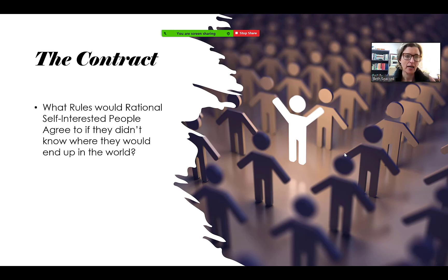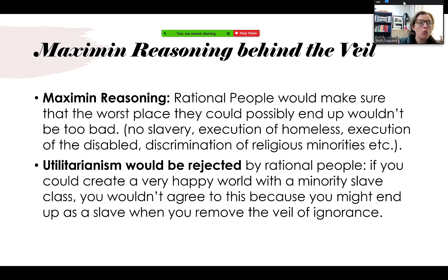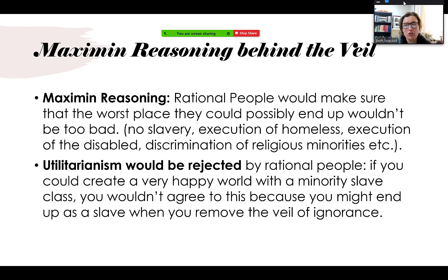So that's the way we decide. Rawls says that we would use something called maximin reasoning when behind the veil of ignorance. Maximin reasoning, just as the word sounds: you maximize the minimum. Rational people would make sure that the worst place they could possibly end up wouldn't be too bad — you're going to maximize the worst-case scenario.